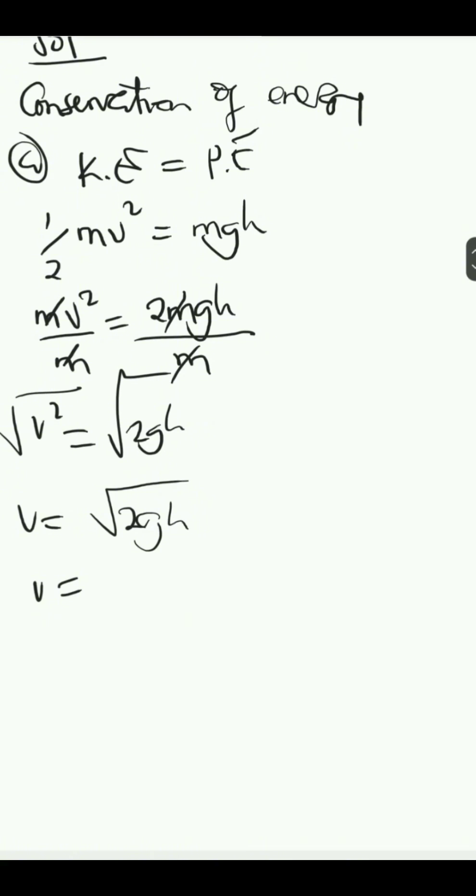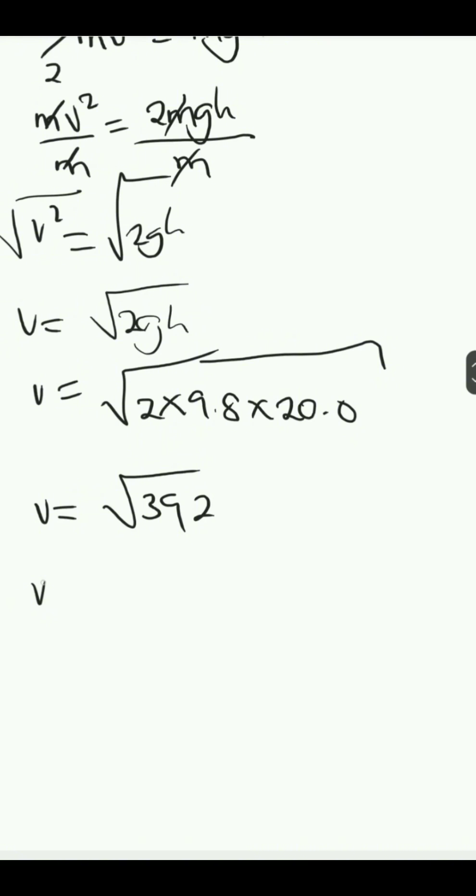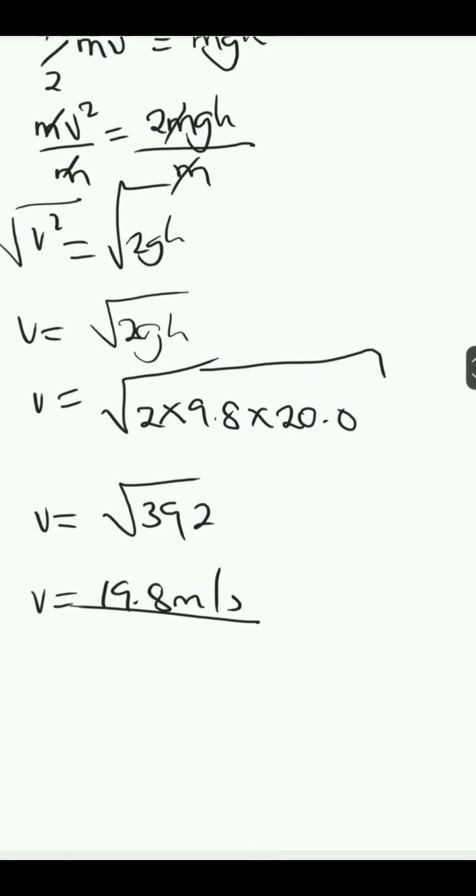Then v is now equal to the square root of 2 times 9.8, then times 20.0, which is the height. So v would be equal to the square root of 392, which gives us our velocity, the speed to be 19.8 meters per second. So we've answered the first part.